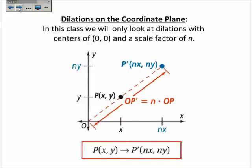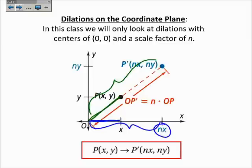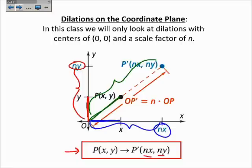Now, dilations in the coordinate plane. In this class we will only look at dilations with a center of (0, 0), and the scale factor we'll call n. If we look at that in the x direction, this length is x, and the corresponding image length is n times x. Similarly, this length is y, and if I multiply by n, I get n times y. So if I take any point (x, y) and dilate it with a scale factor of n, I will get that P' equals (nx, ny). Pretty simple formula, but I hope it makes sense.